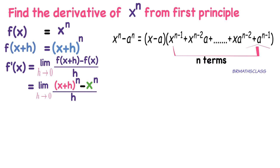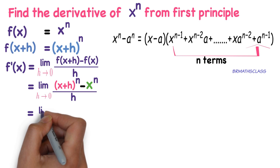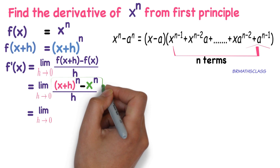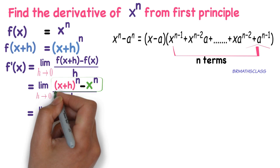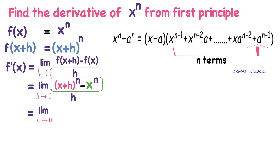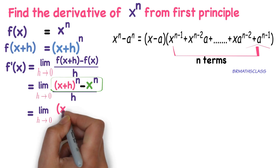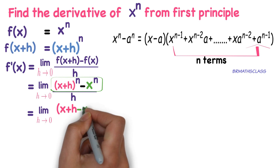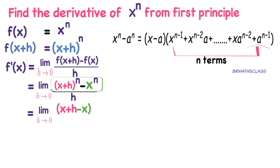Please observe clearly — it can be understood easily. Now limit h tends to 0, you observe this expression. This is of the form x power n minus a power n. What is the formula? x minus a. What is x here? x plus h. What is a? x.